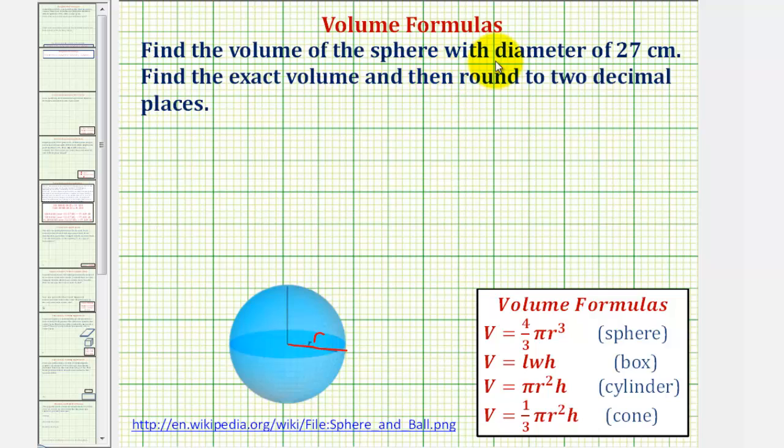Notice how in this example, we're given the diameter, which would be the segment passing through the center with two endpoints on the surface. So the diameter would be this distance here. Notice how the radius is equal to half of the diameter.